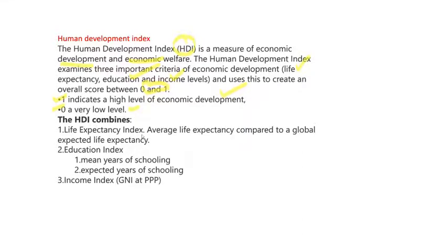HDI uses three indicators: life expectancy index, education index, and income index. Life expectancy refers to the average life of a particular person compared to the global expected life expectancy — normally 83 years. The education index covers mean years of schooling and expected years of schooling. In the income index, we use GNI at PPP — Gross National Income at Purchasing Power Parity.